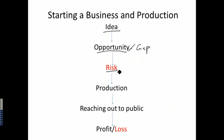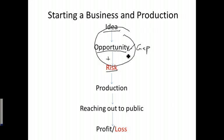The third step is risk. Opportunity comes hand in hand with risk. So when somebody has an idea, can see an opportunity, and is willing to accept and take the risk, they have completed the first major step. All three components — idea, opportunity, and risk — make up the first step of any business idea. If it's individuals doing this, we can call them entrepreneurs.